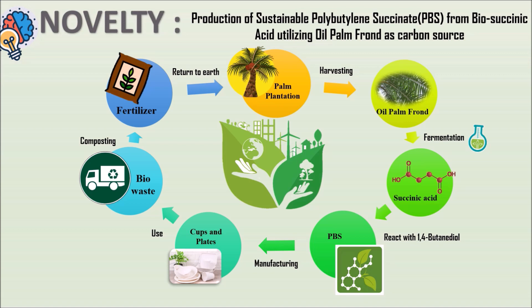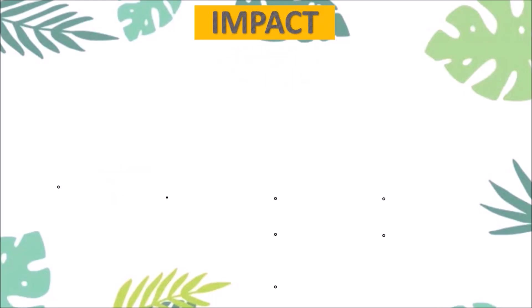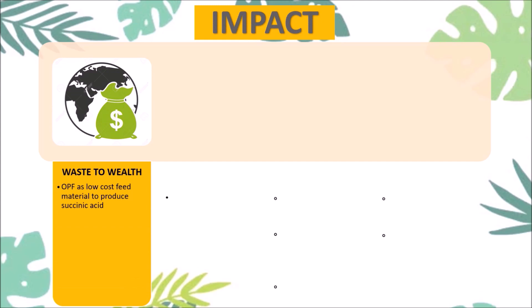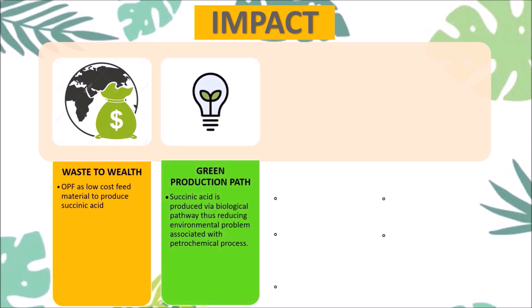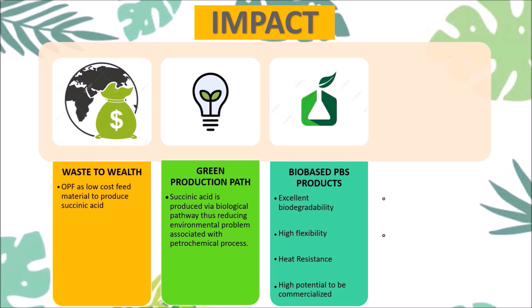At the end, the bio-waste is returned to earth as fertilizer to any agricultural industries. The impacts of the innovation are: First, waste to wealth, where the low-cost OPF is utilized to produce a value-added product — that is succinic acid. Secondly, greener succinic acid production path. Thirdly, the bio-based PBS products have good properties and high potential to be commercialized.